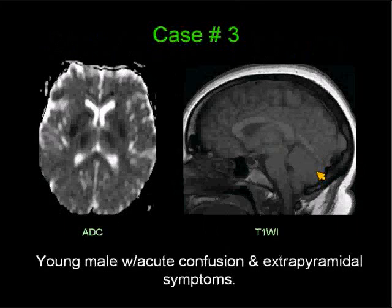Let's go to case number three. This is a young male with acute confusion and extrapyramidal symptoms. I'm showing you an ADC map through the basal ganglia and a mid-sagittal T1-weighted image without gadolinium. Give you a couple of seconds to look at the findings there.